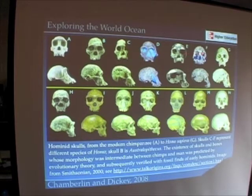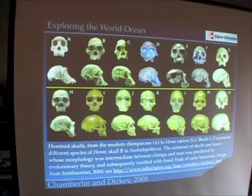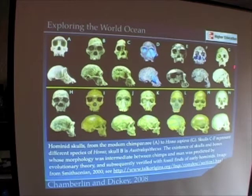These skulls in between represent various stages in the evolution of humans. Now, to an untrained eye, all these skulls might look exactly the same, but if you look really closely, the ridges above the eyes and the eye sockets themselves are much different in the chimpanzee than in the humans.